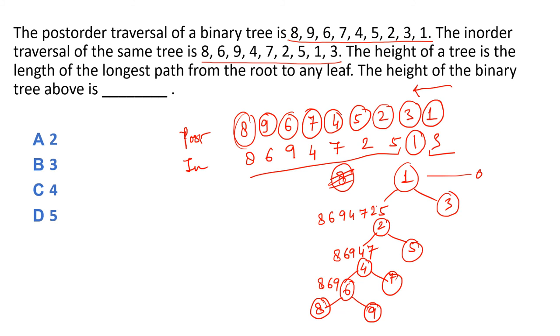Tree ki height: level 0 (root), level 1, level 2, level 3, level 4. Height depth ke equal hai — is tree ki height 4 hogi.